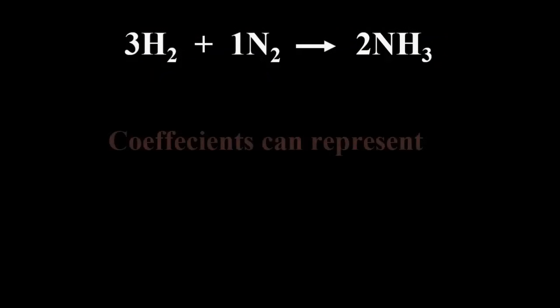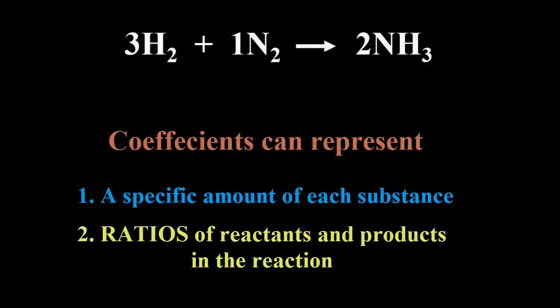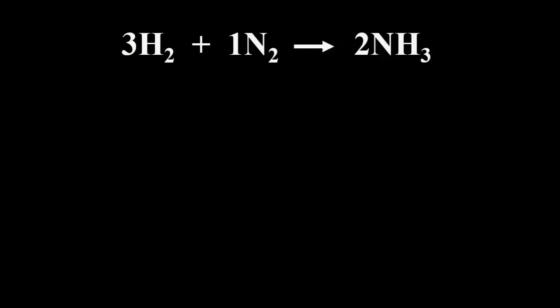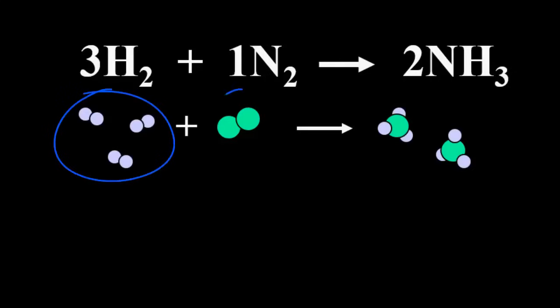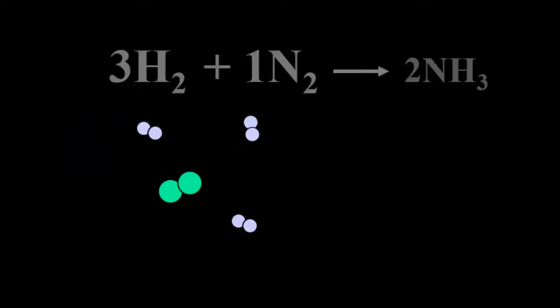We can look at coefficients as representing either a specific amount of something — an amount of particles — or as ratios of reactants and products in the reaction. To really understand how stoichiometry works, we have to understand what those coefficients are actually telling us. If they refer to a specific amount of particles, that tells us how many particles are reacting and how many will be produced. For example, we would have three hydrogen molecules reacting with one nitrogen molecule, and that produces two ammonia molecules.